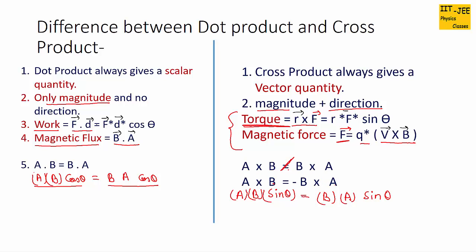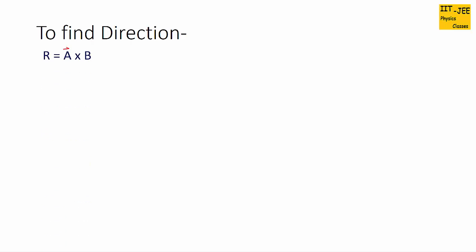So A cross B does not give the same resultant quantity as B cross A. Next we will find the direction of cross product. If there are two vectors A cross B and the resultant quantity is vector R, the magnitude would be A times B times sin theta. We have already discussed how to find the magnitude of cross product in part 11, so please watch part 11 for more detail.